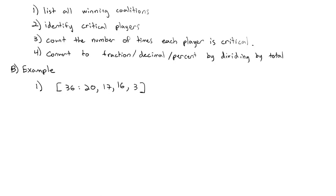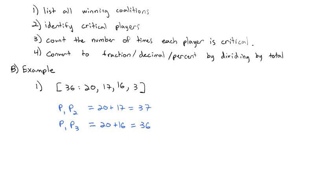Let's see if there are any two-player coalitions that are enough to win. Player 1 and Player 2 gives 20 plus 17, which is 37 votes — definitely enough for a winning coalition. Player 1 combined with Player 3 gives 20 plus 16, which is 36, enough to meet quota. Player 1 and Player 4 is only 23 votes, not enough. Players 2 and 3 give 17 plus 16, which is 33 — not enough. Those are the only two-player coalitions.